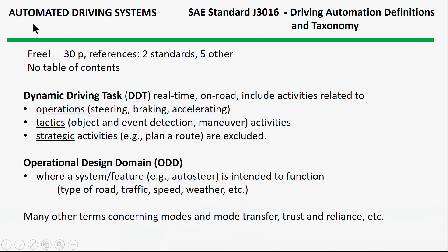The next topic is automated driving systems. One example of a relevant standard is SAE J3016. This one is pretty widely used and it pertains to both definitions and a taxonomy of automated driving systems. It's a rather unusual standard because it's available for free. It's 30 pages long and has a number of definitions, some of which are very useful and some of which are rather confusing to the novice. There are a number of terms worth bringing forward because they're really important.